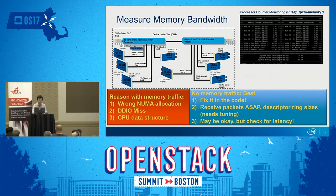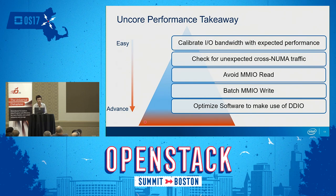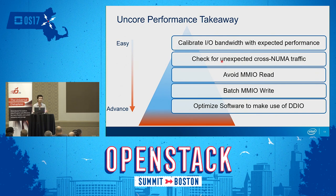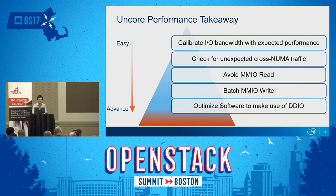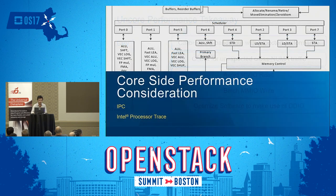The off-core takeaways, from easiest to most advanced: calibrate your I/O bandwidth with expected performance using available hardware counters; check for unexpected cross-NUMA traffic — adding a second CPU socket without proper NUMA-aware allocation can cause unexplained performance drops; avoid MMIO reads (long-latency instruction); batch MMIO writes; and hopefully we can meet again to discuss how to optimize software to best use DDIO — it's a very advanced topic.